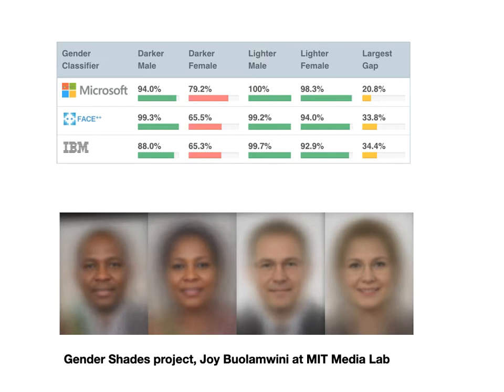Joy Buolamwini and her team in the Gender Shades Project audited many different facial recognition systems and found that most of them are really pretty good at recognizing light-skinned men, not quite as good at recognizing light-skinned women but still pretty good, and terrible at recognizing dark-skinned females.